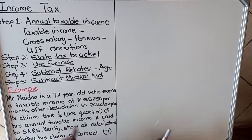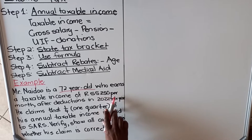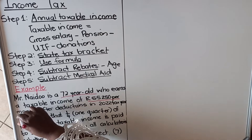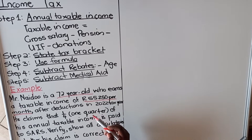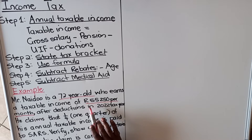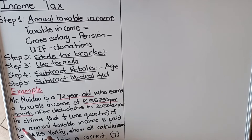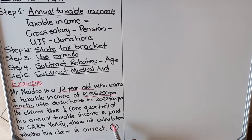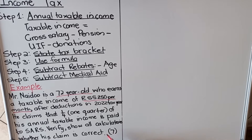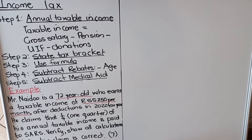In our example we have a story of Mr Naidu, who is 72 years old — the age is important. He earns a taxable income of R55,250 per month. You need to read carefully whether the amount given is per year or per month. In the 2022 tax year, deductions have already been made. The question asks you to verify whether his claim that a quarter of his annual taxable income is paid to SARS is correct.